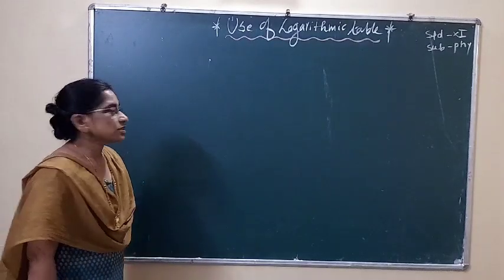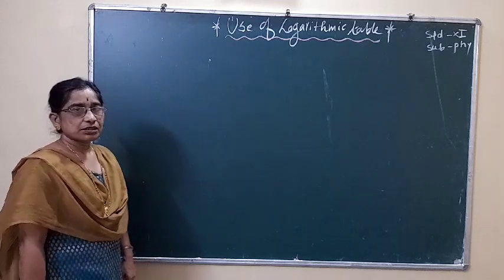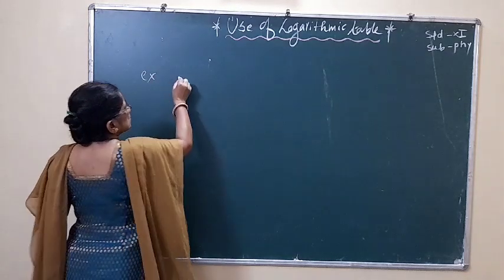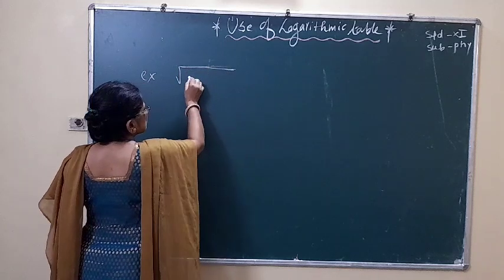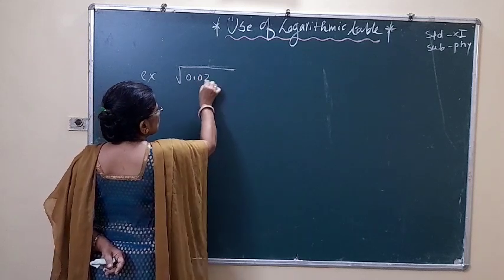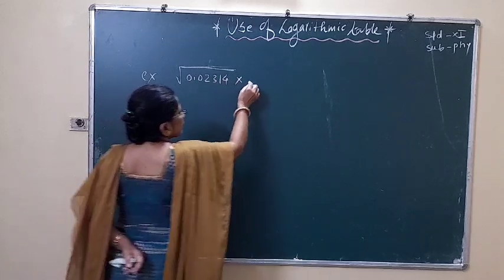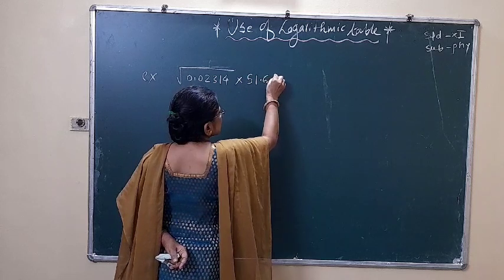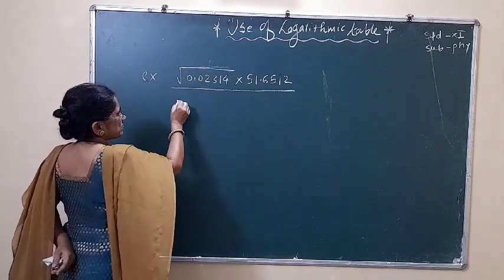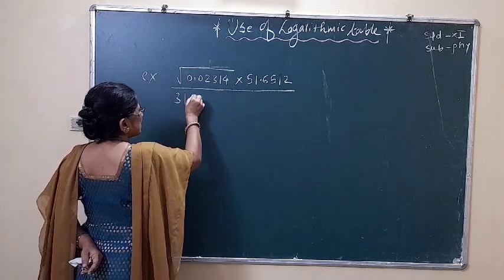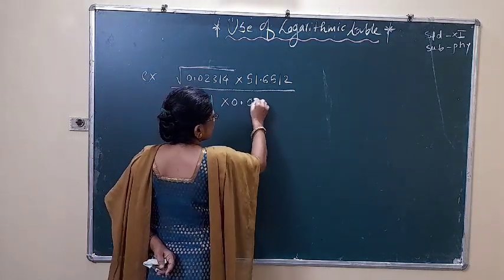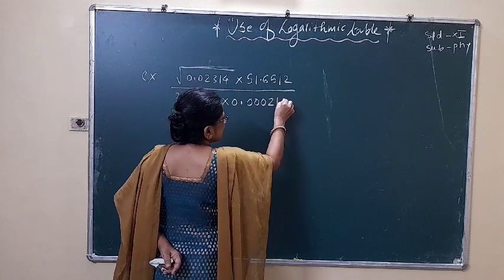Hello students. We have to see an example by applying two or three laws together. The example is: under root of 0.02314 into 51.6512, divided by 31.651 into 0.00002110.